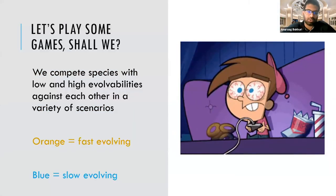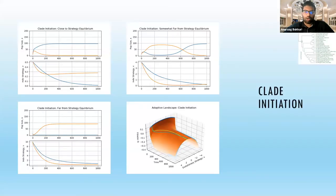We're going to compete species with low and high evolvabilities against each other in a variety of evolutionary scenarios. In all the following graphs, the orange curves will represent the fast evolving species, and the blue will represent the slow evolving species.